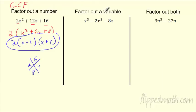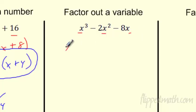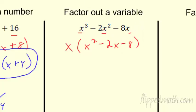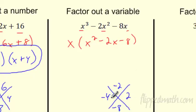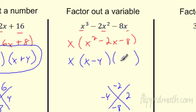We can also pull out a variable to start. Pull out an x, and what's left is x squared minus 2x minus 8 — they all had at least one x. Now I need to ask: does this factor? What multiplies to negative 8 and adds to negative 2? It looks like 4 and 2 — but remember the negative is so important. It's negative 4. So this breaks into x minus 4, x plus 2. Again, I had to do a couple of different steps.